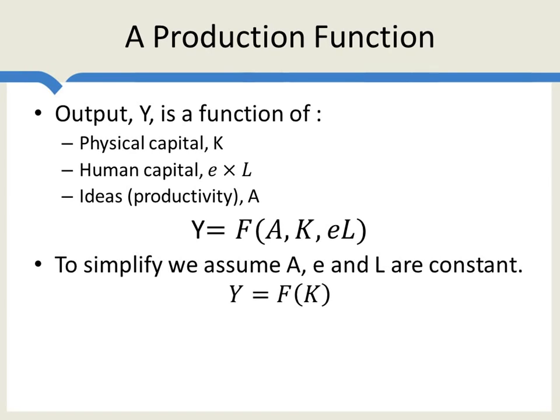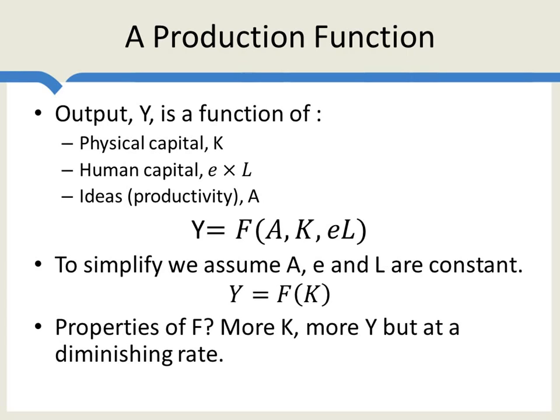To begin, we're going to assume that a, e, and l are constant — so there's no population growth, no idea growth, no education growth. This means we can write output as simply a function of capital. What kind of properties do we want this function to have? Basically two: we want more capital to produce more output — a positive function — but we want it to do so at a diminishing rate. Each addition to capital should generate smaller additions to output, the more capital we already have. A nice simple function with these properties is a square root function, so we write output equals the square root of capital.